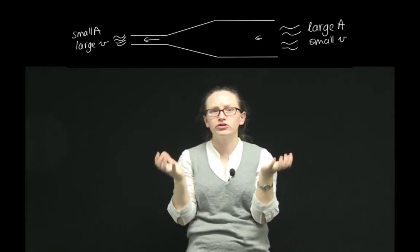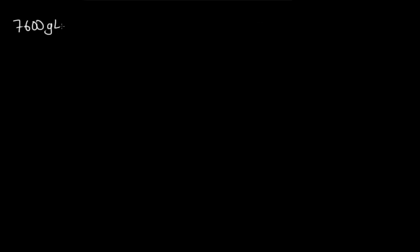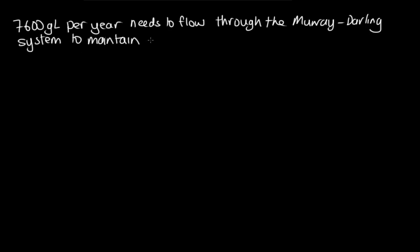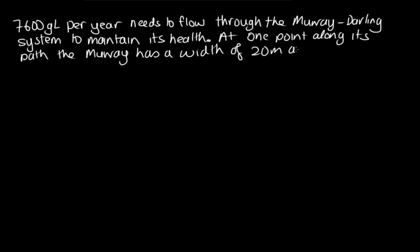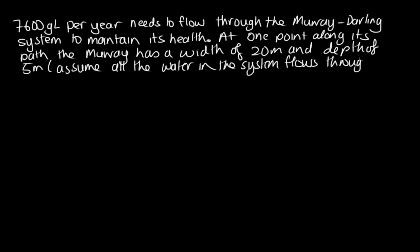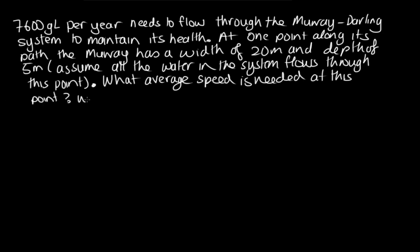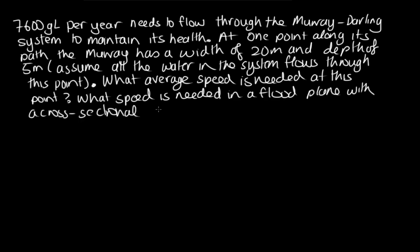Let's solve a problem using this equation now. 7,600 gigalitres per year needs to flow through the Murray-Darling system to maintain its health. At one point along its path, the Murray has a width of 20 meters and a depth of 5 meters. We're going to assume that all the water in the system flows through this point. What average speed is needed at this point? And what speed is needed in a floodplain with a cross-sectional area of 1,000 meters squared?